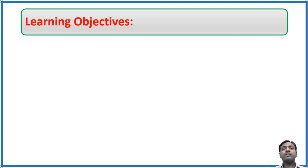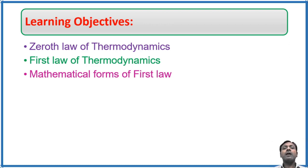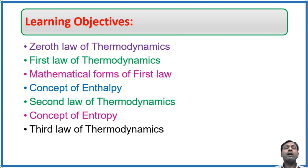The learning objectives of this video are: What is the zeroth law of thermodynamics? What is the first law of thermodynamics and what are its various statements? What is the mathematical form of the first law? How the first law will be converted into other forms in various processes like isothermal process, adiabatic process, etc.? We will also discuss enthalpy, the second law of thermodynamics and its various statements, the concept of entropy, and the statement of the third law of thermodynamics.